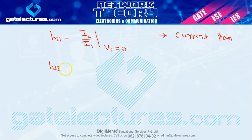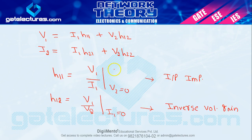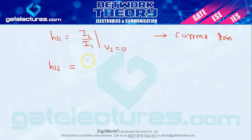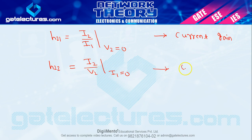Now h22 — h22 = i2/v2 when i1 = 0. हम जानते हैं current upon voltage आपका admittance होता है. This is 2 upon 2, that is output admittance.